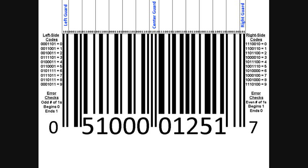So in this case, we'll plug in the numbers above, and you'll see that those numbers are the exact same as the numbers below. But what do these numbers actually mean? Well, the first number on the left-hand side — the zero, which is outside of the actual barcode — tells us what type of barcode this is. A zero is a standard barcode, a two is a weight item like fruit or meat, a three is a pharmacy item, and a five is a coupon.